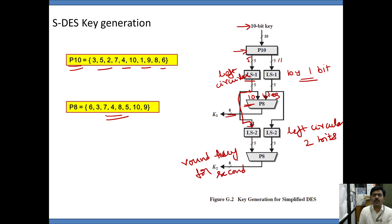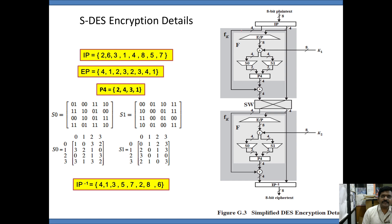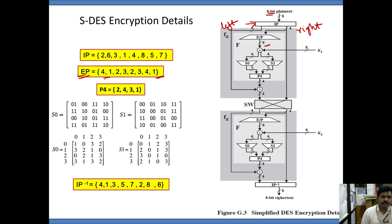This is how we get two round keys for SDES. During encryption, the given 8-bit plain text undergoes initial permutation and subsequently gets divided into two halves: the left half and the right half. The right half of 4 bits undergoes an expansion operation with the help of the EP table. The 4 bits of the right half get expanded to 8 bits, essentially gaining extra 4 bits by repeating certain bits from the given 4 bits.